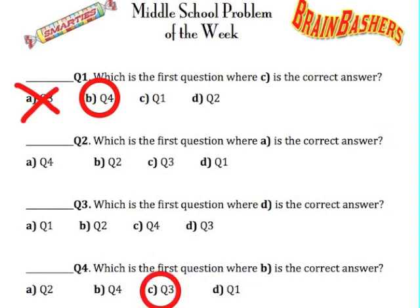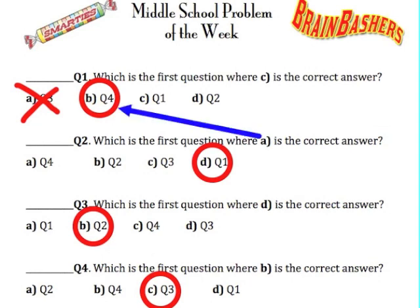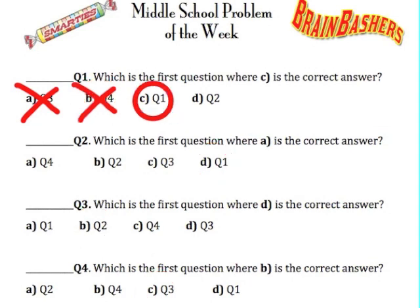So what if it's B? Well, that would lead to this, which would lead to this, which would lead to this, but then that's a contradiction, so it can't be B.